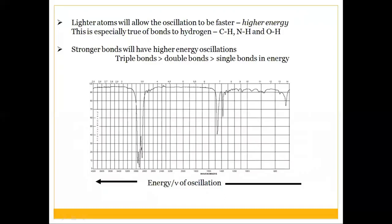Stronger bonds have higher energy oscillations. Triple bonds appear at higher wavenumbers than double bonds, which appear higher than single bonds. For example, near C=C or C≡C bonds, the absorption frequency follows the order: triple bond > double bond > single bond region.